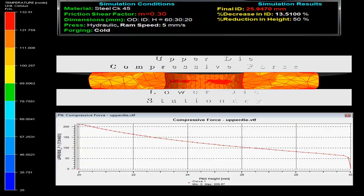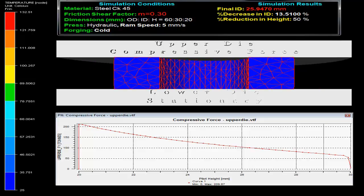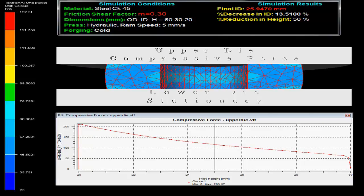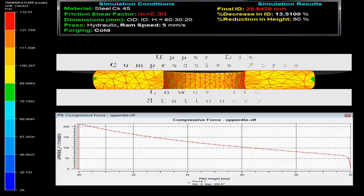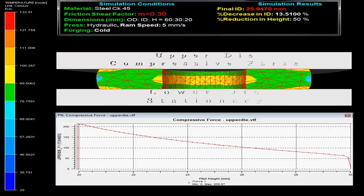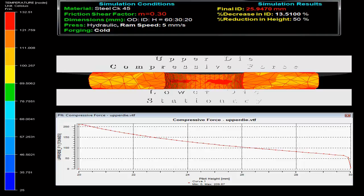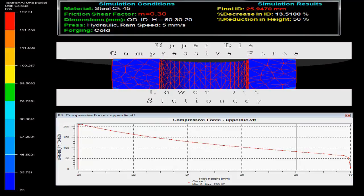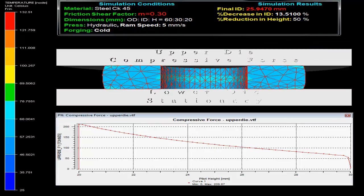On the top left corner in the video one can observe the simulation condition. The specimen material is steel. Friction shear factor M is 0.30 and initial outer diameter to inner diameter to height is 60 to 30 to 20.